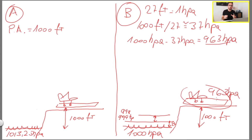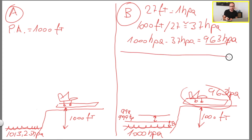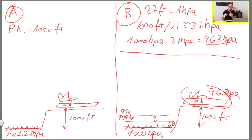Now that we know the pressure around the aircraft is 963 hectopascals, we can calculate the pressure altitude. To do that, we need to know the difference in pressure between 1013 hPa and 963 hPa. Once we know that pressure difference and multiply it by 27, it gives us the difference in height — and that difference in height is actually the pressure altitude.